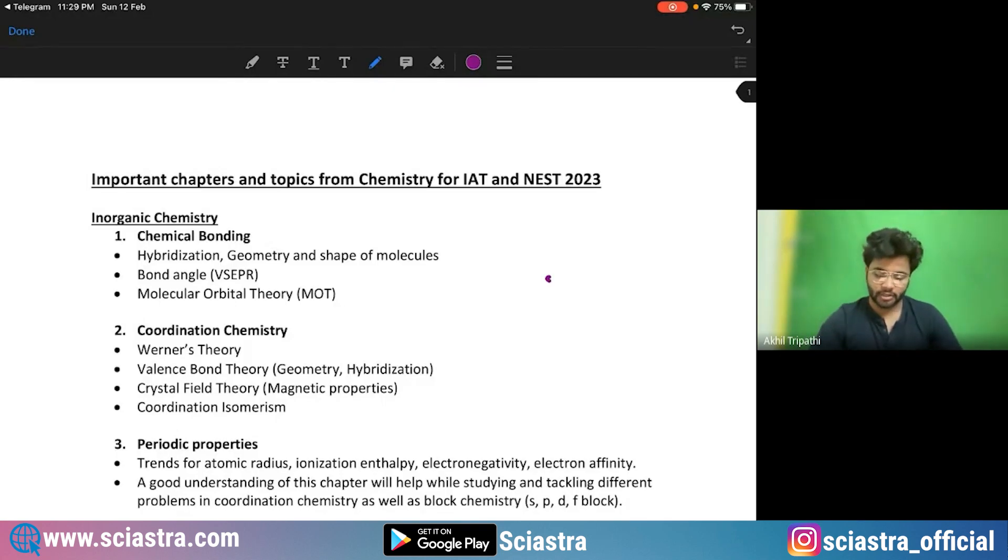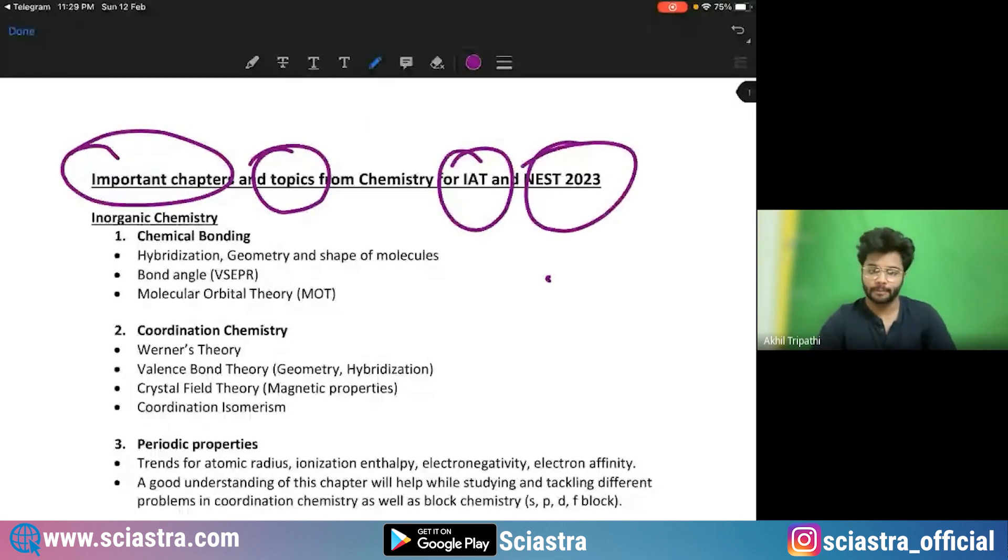So in this video we will see the important chapters and topics for IAT and NEST 2023 Chemistry section. Now I hope you all know that our predictions have been very accurate. Last year 10 to 15 questions were repeated in IAT and NEST examinations.